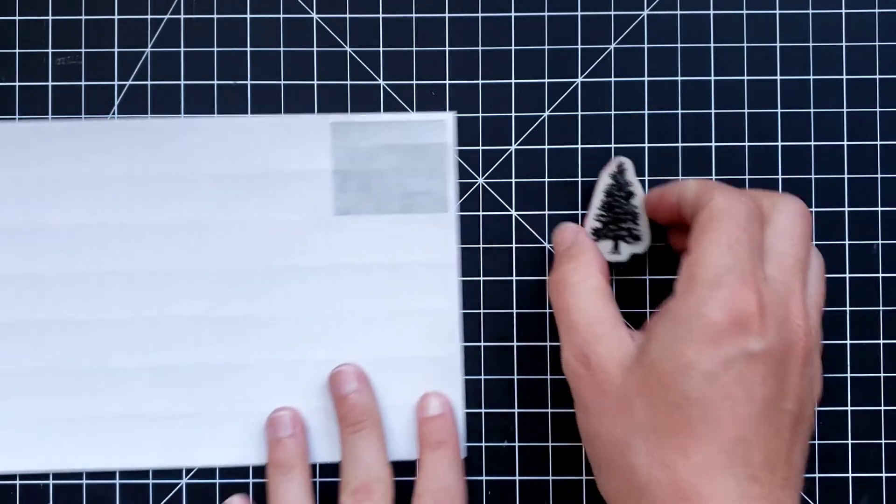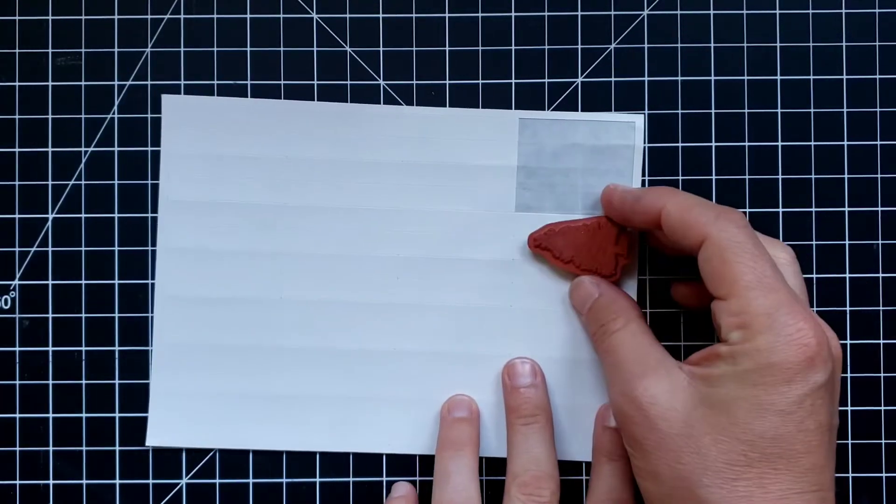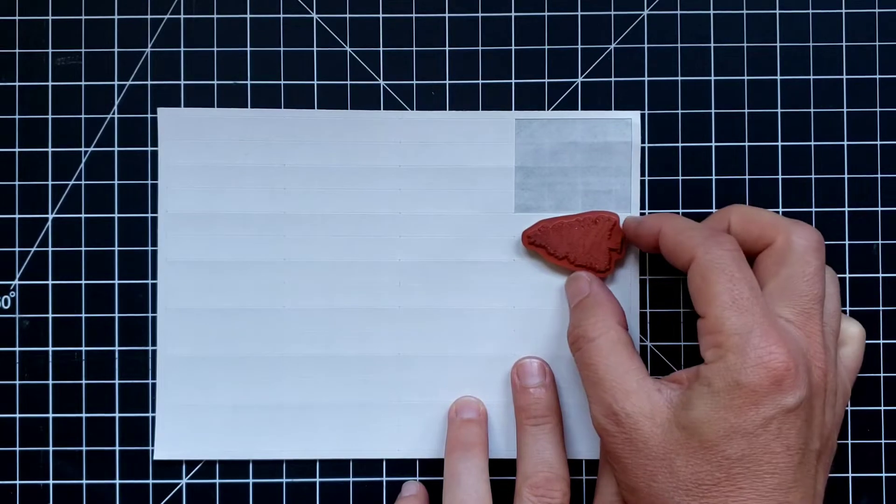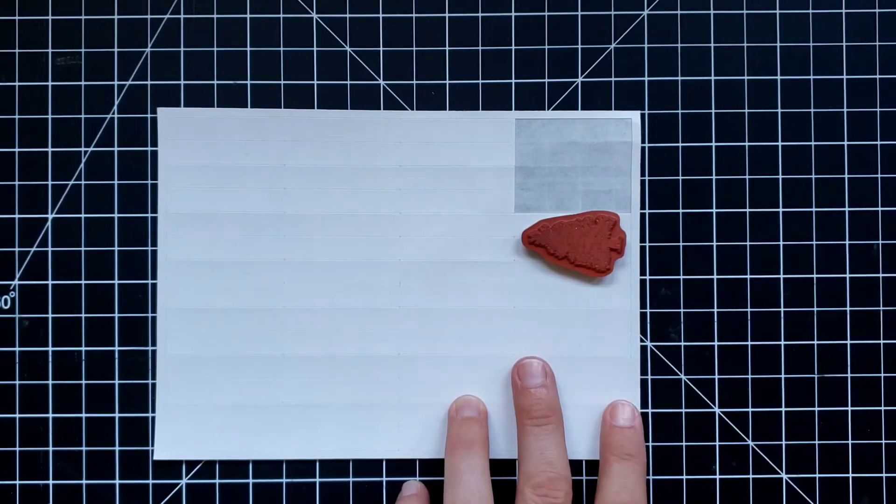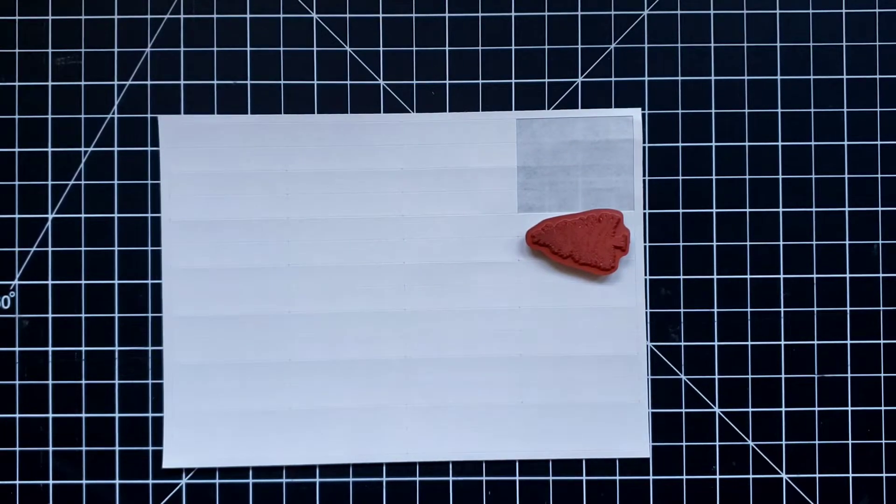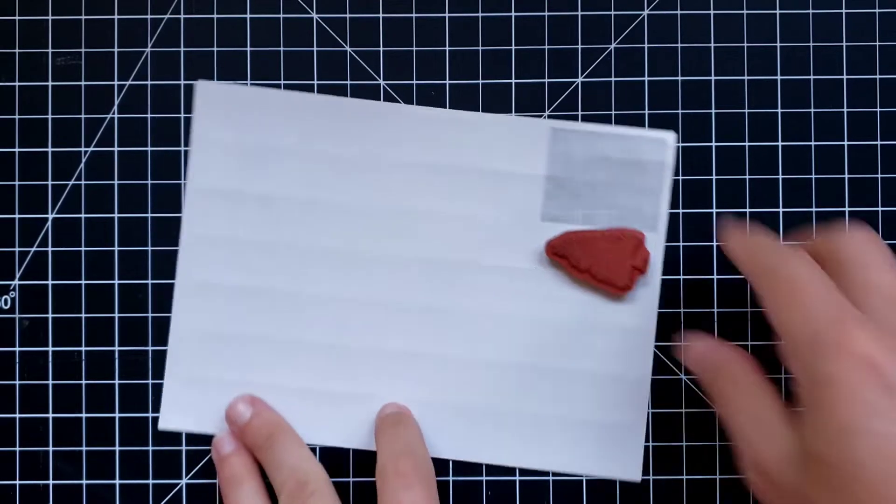Now here's a smaller one. So if I stick this down, that adhesive strip is going to stick outside of the edges of this stamp. So I want to show you what I decided I like to do.